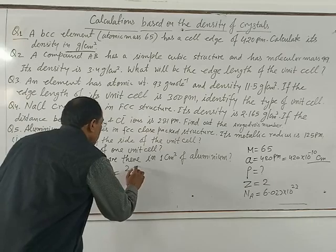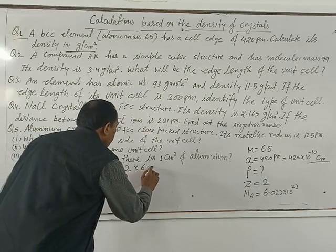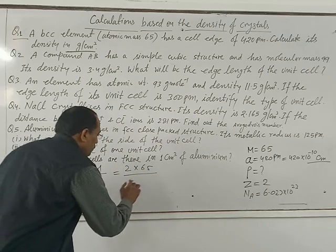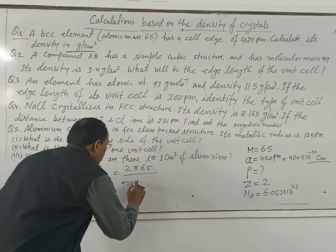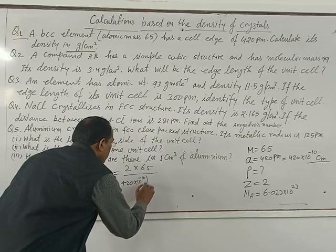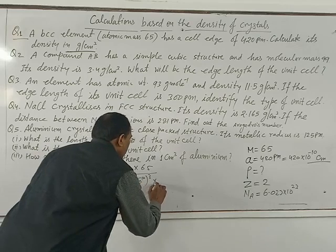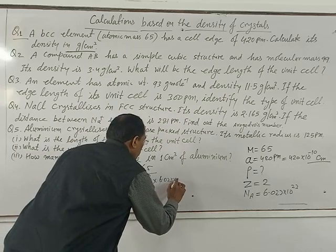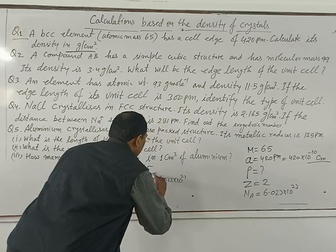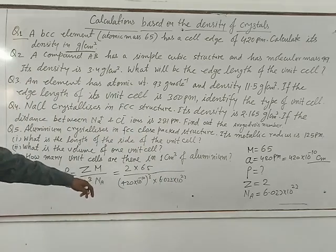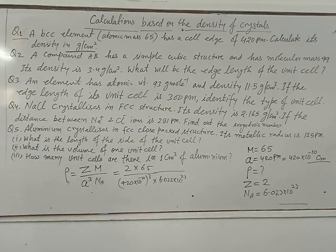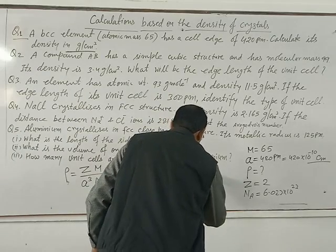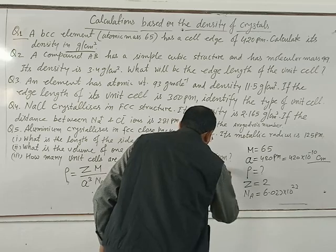Now substitute these values: Z equals 2, M equals 65, A equals 420 times 10 to the power minus 10 centimeters, and N equals 6.023 times 10 to the power 23. Calculating this, we get 2.91 grams per centimeter cubed.